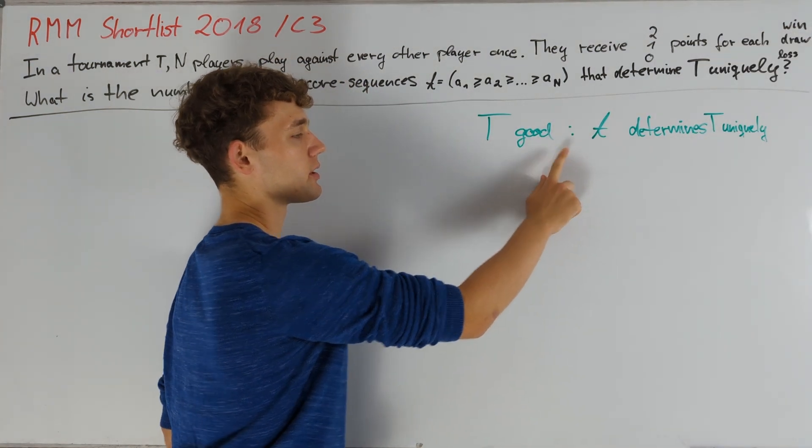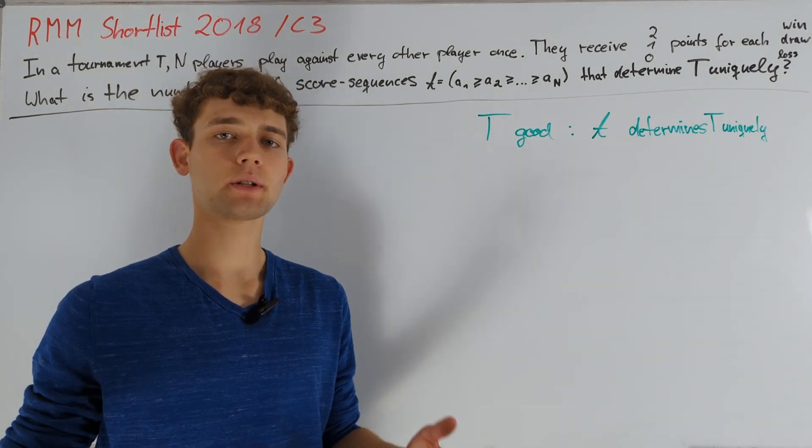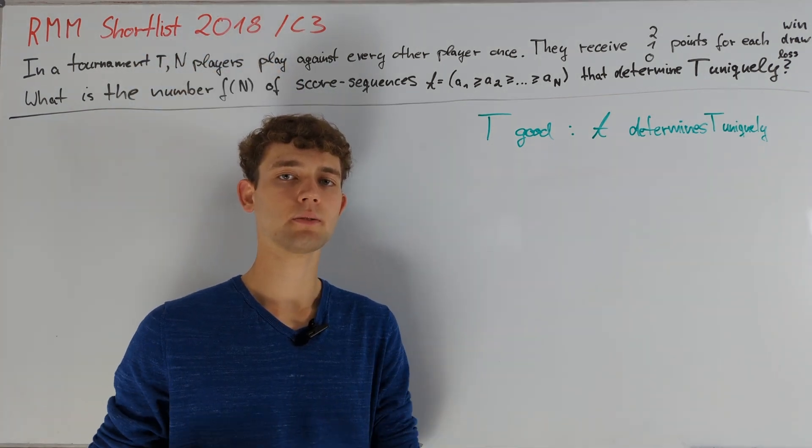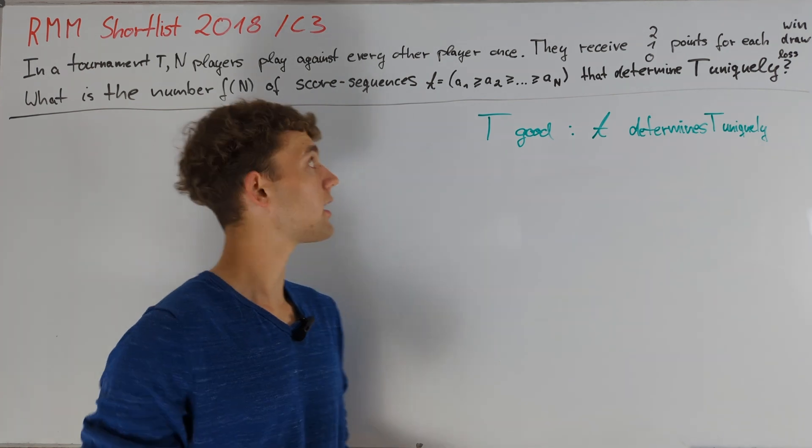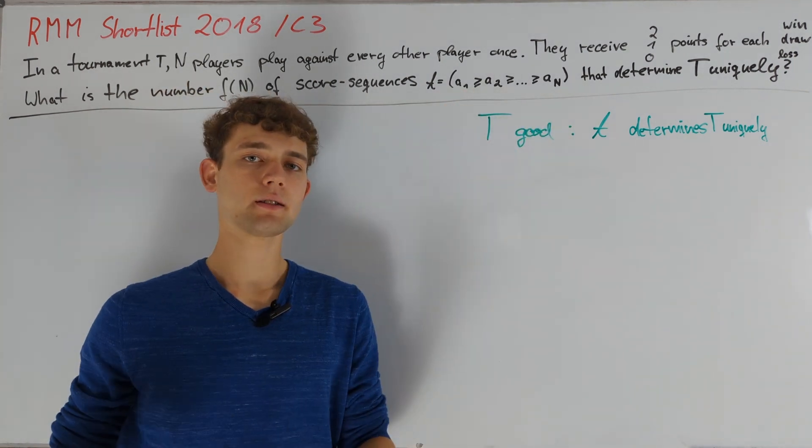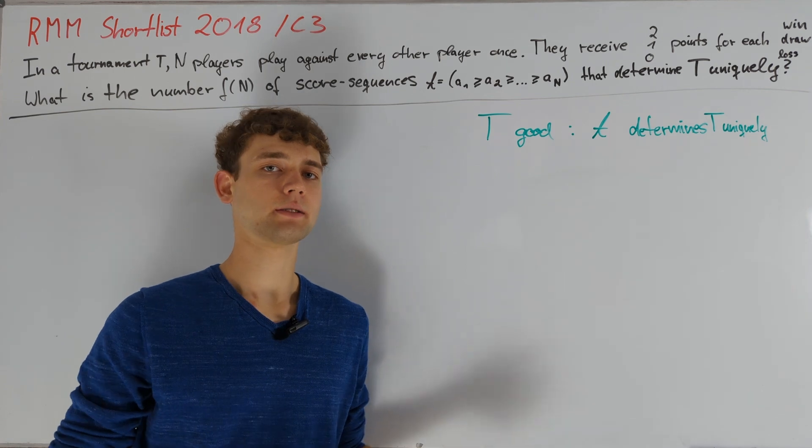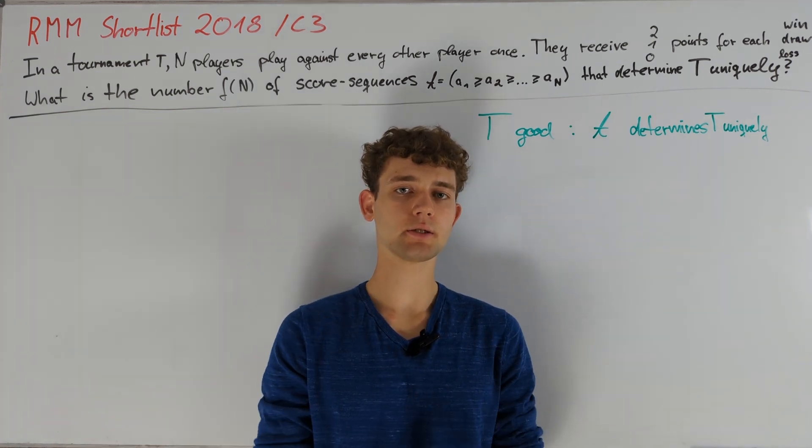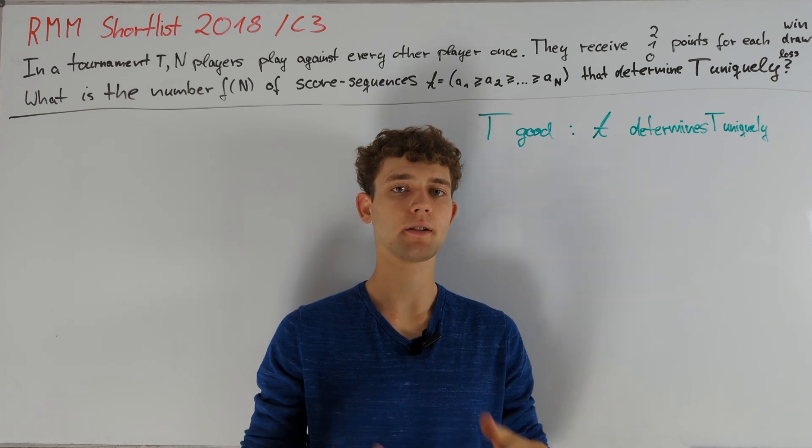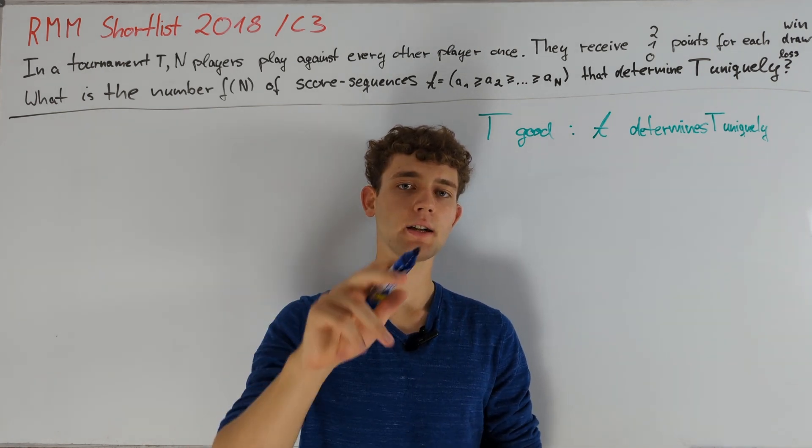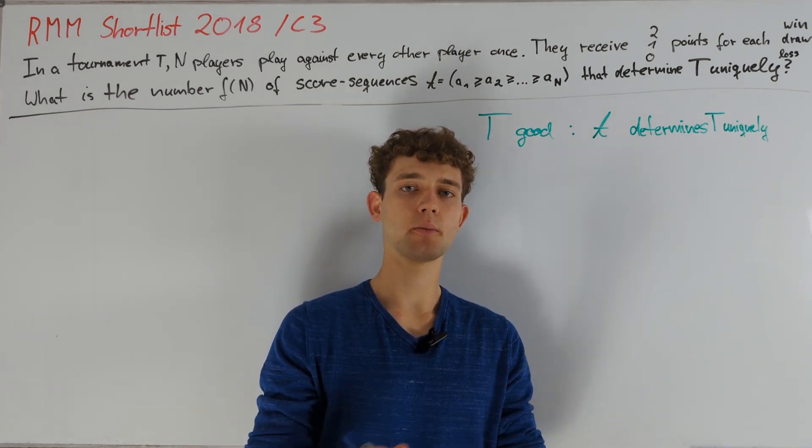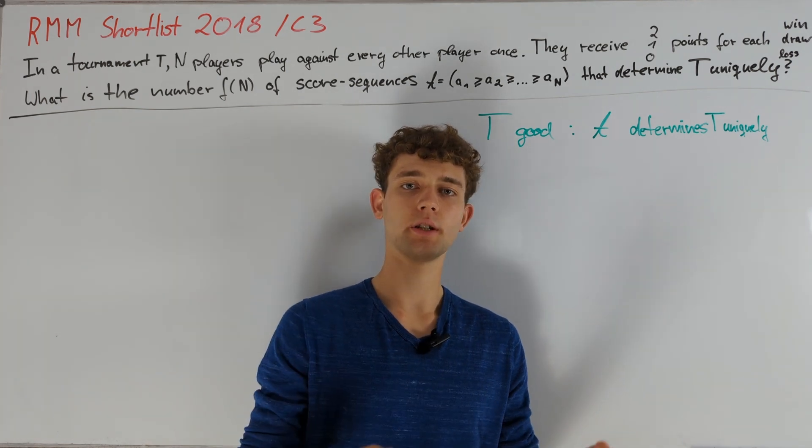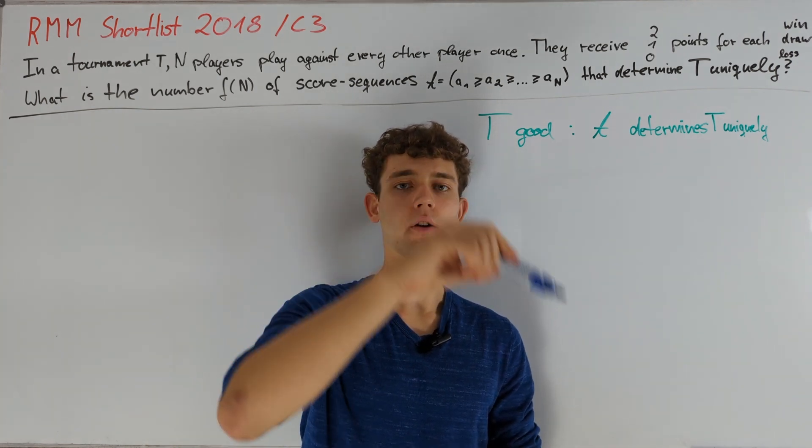Now let's consider a good tournament T and try to figure out some properties about it. The main observation is that if we have two small tournaments T1 and T2 that are distinct but have the same score sequence, then T can't contain either of them as a sub tournament. One example that illustrates this approach and is also very powerful in itself is the cycle.